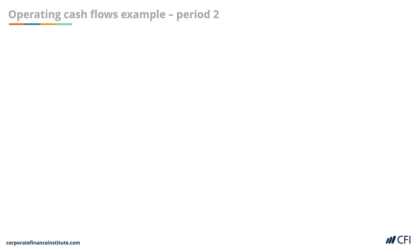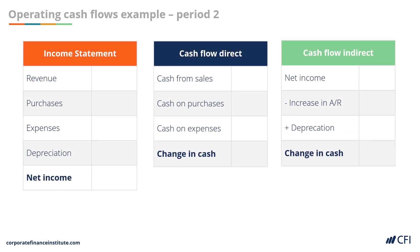Let's work through each transaction individually. Johannes had cash purchases of $280,000 with no inventory left at the end of the period, so cost of goods sold was $280,000, and cash purchases on the direct cash flow statement was also $280,000. In terms of revenue, Johannes recorded $300,000 of cash sales and $170,000 of sales on credit, totaling $470,000 on the income statement. On the direct cash flow statement, only the $300,000 of cash sales are recorded at this time.